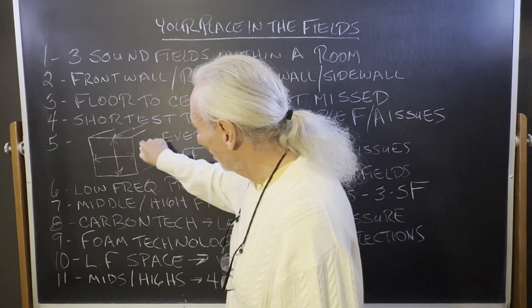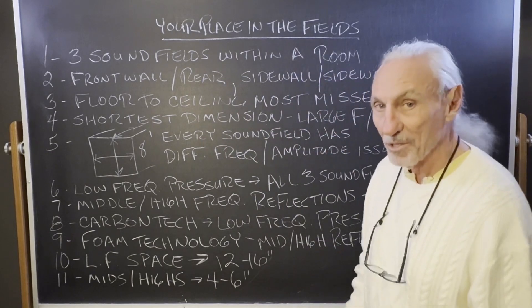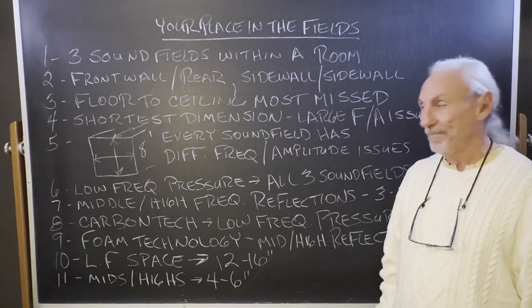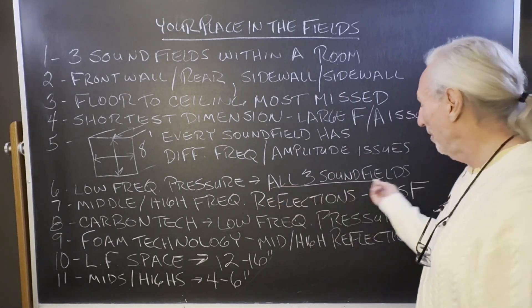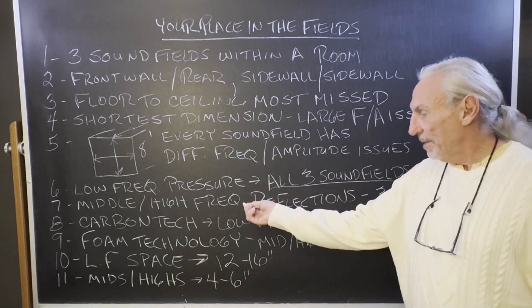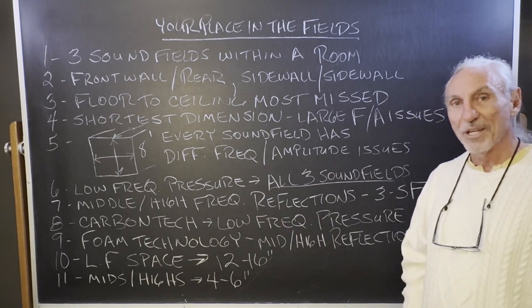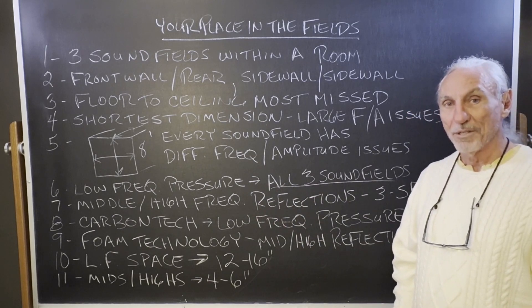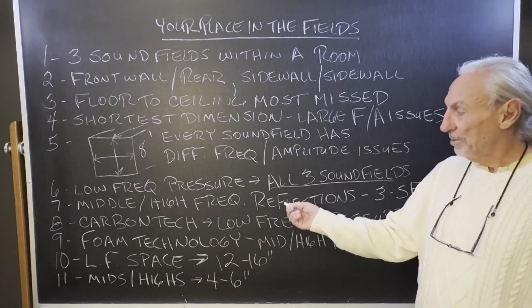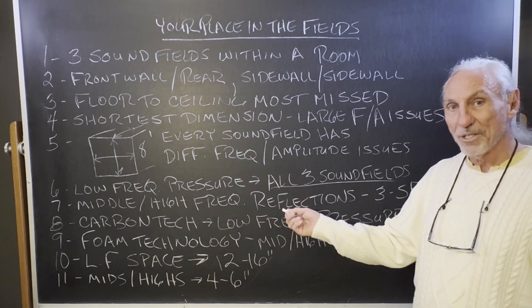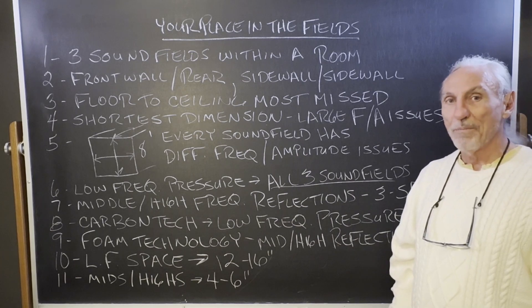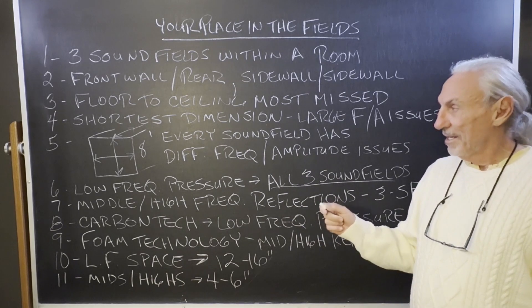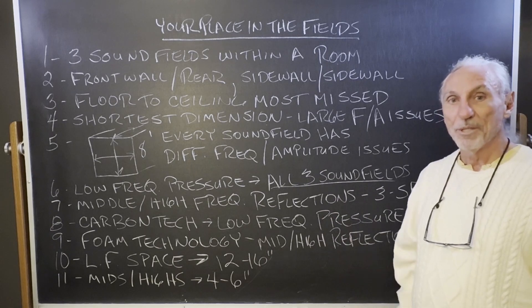In most rooms we deal with in North America, 8 foot ceilings give you that 70 cycle problem. Low frequency pressure is in all three sound fields, and middle and high frequency reflections are in all three sound fields. You have to treat both pressure and reflections in all three sound fields. It's very important that you understand the room is really three rooms in one.